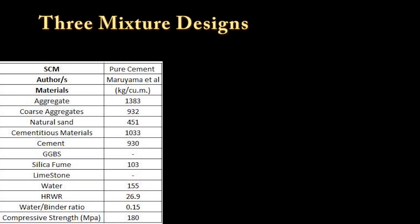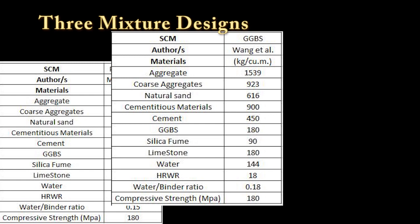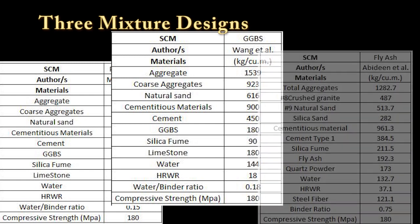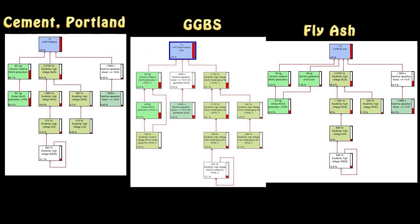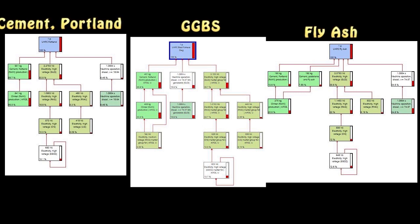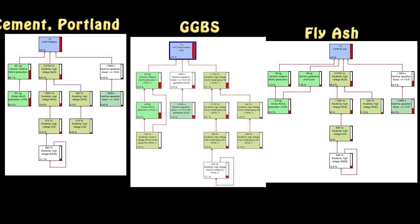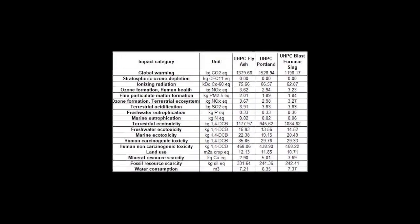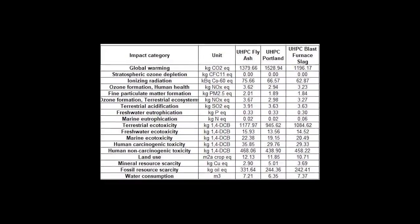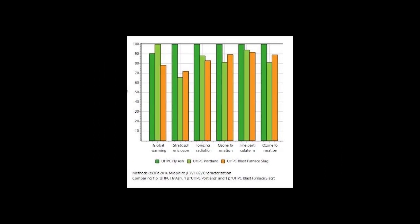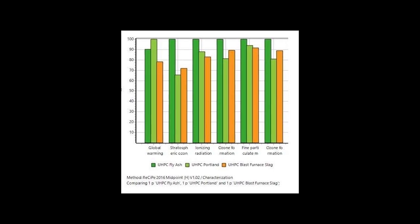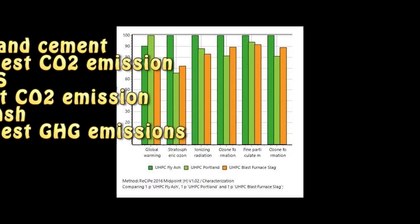Three mixture designs were evaluated in this study: UHPC with pure cement, UHPC with ground granulated blast furnace slag, and UHPC with fly ash. Based on the promising mechanical properties from available data in previous studies, the developed UHPC mixtures using supplemental cementitious materials were evaluated in terms of environmental impact indicators through SimaPro. As a preliminary result, comparing UHPC with blast furnace slag, UHPC with fly ash, and UHPC with Portland cement, the table shows that UHPC with fly ash gives the highest greenhouse gas emissions.